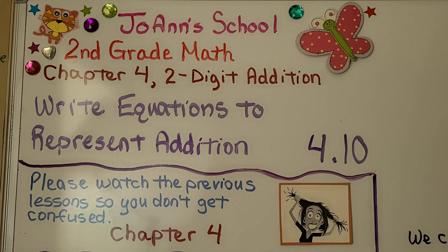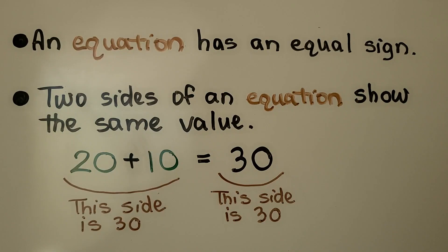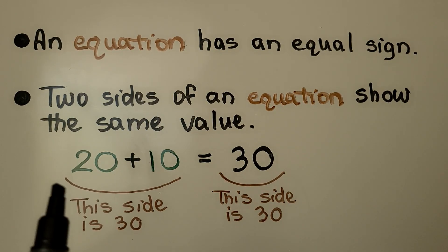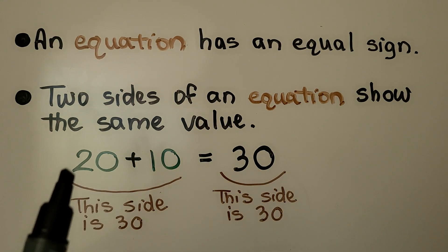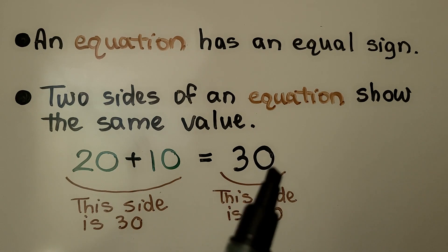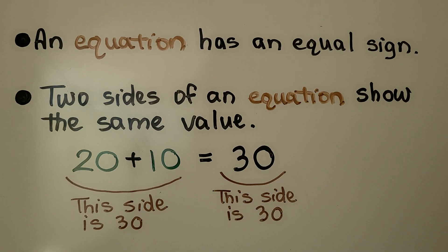Lesson 4.10: Write Equations to Represent Addition. An equation has an equal sign. This is an equation, and two sides of an equation show the same value. We have 20 plus 10, and on this side of the equal sign, we have 30. This side is showing 30, and this side is showing 30.